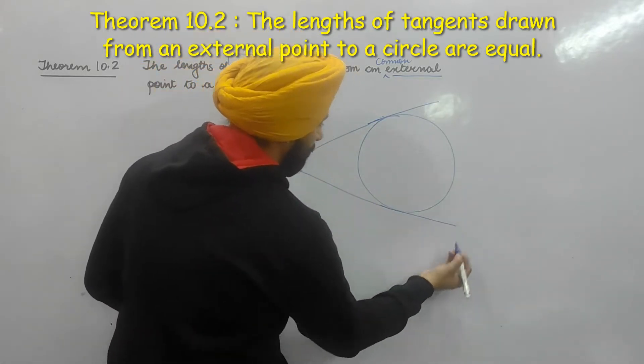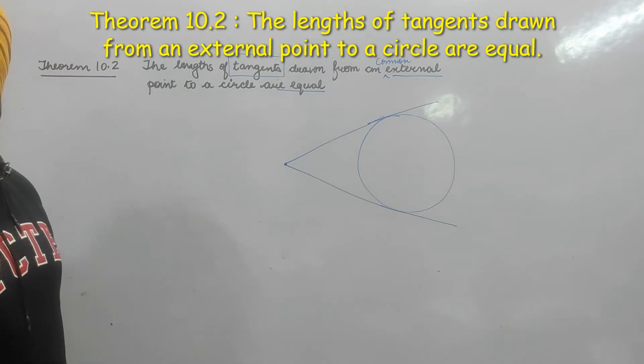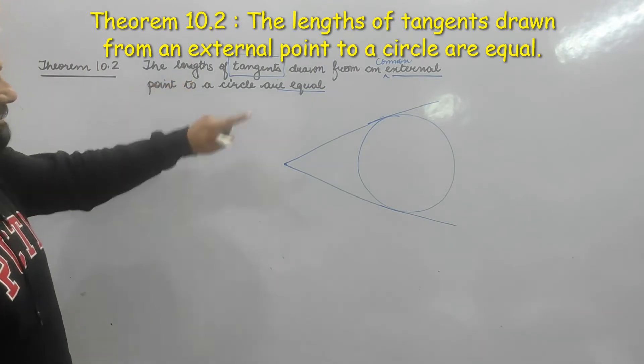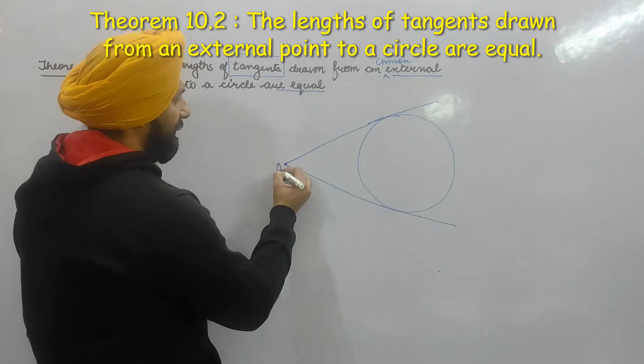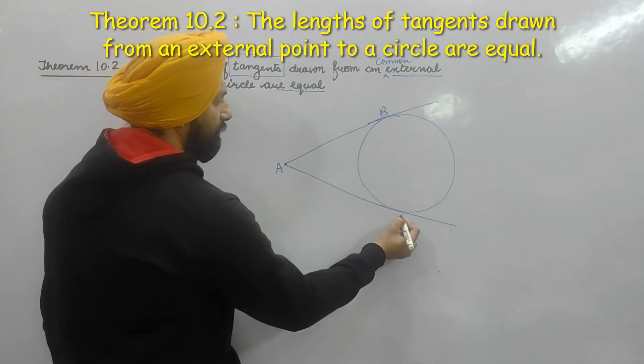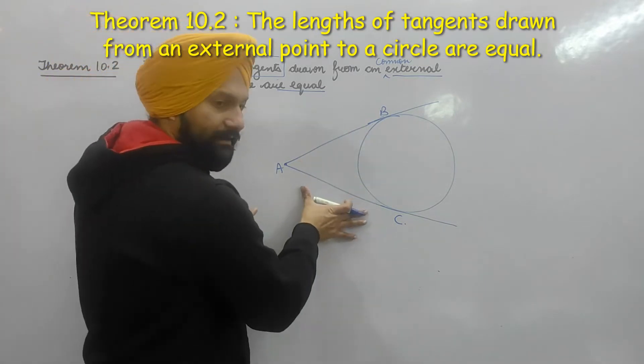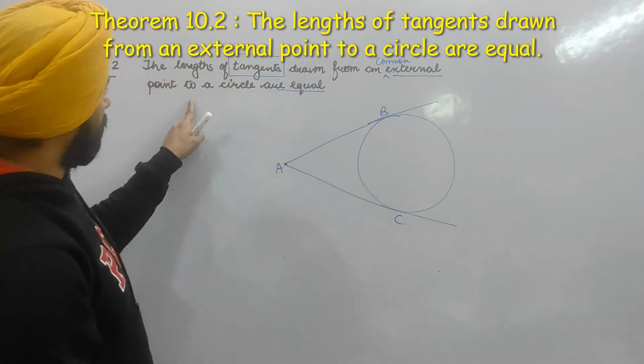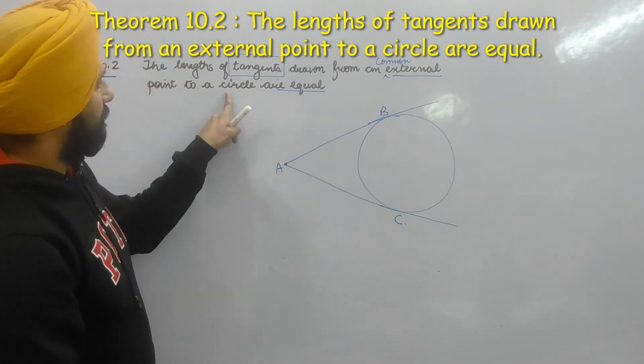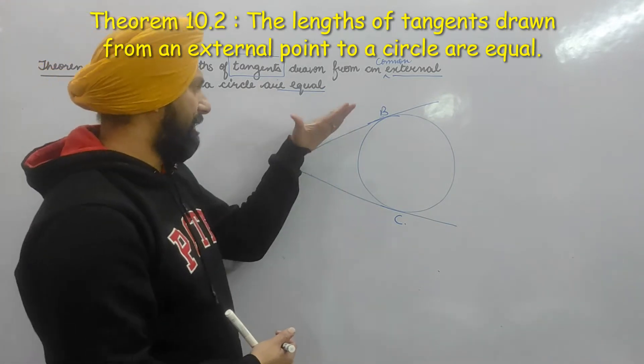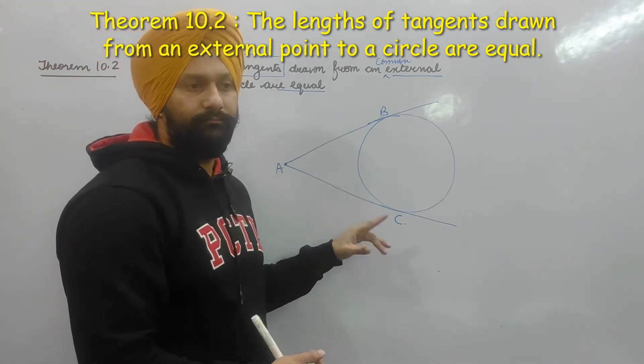The length of the tangents from the common external point A are equal. Now let me show the proof that AB equals AC.